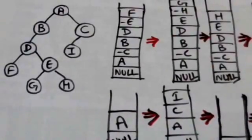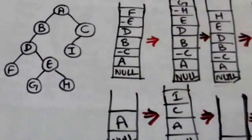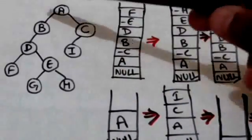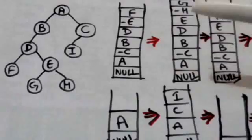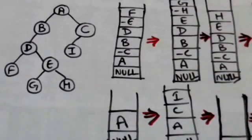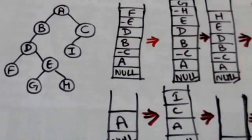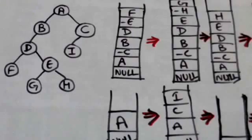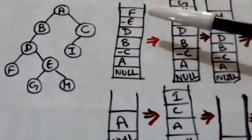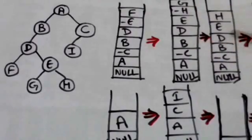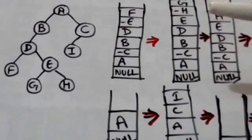Suppose this is the binary tree T and we have to traverse it in post-order. First of all, we will push null into the stack. Node A is the root of binary tree T. We push node A into the stack; node A has a right child, that is node C, so we push minus C into the stack. Left child of node A, that is node B, is pushed into the stack. Node B doesn't have any right child. Left child of node B, that is node D, is pushed into the stack. Node D has a right child, that is node E, so minus E is pushed into the stack.